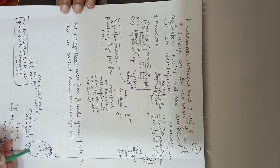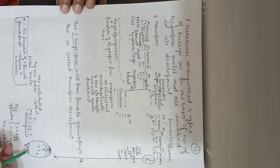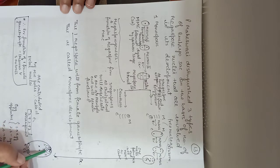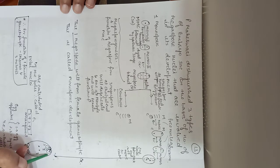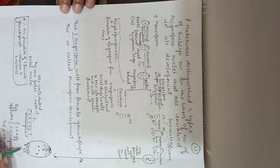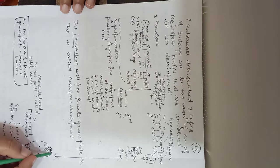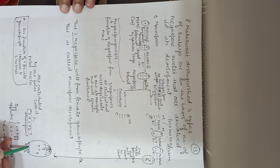Three nuclei will be at the micropylar end and three nuclei will be at the chalazal end. Cell wall will be laid around each of these three nuclei. This arrangement is called the 3 plus 2 plus 3 arrangement.